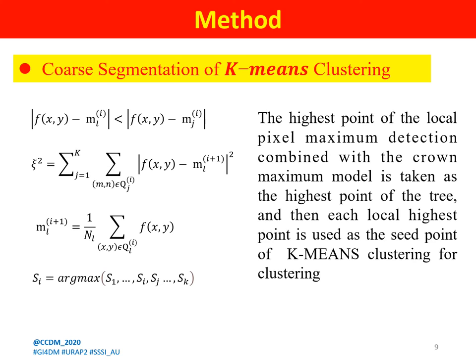The highest point of the local pixel maximum, combined with the crown maximum model, is taken as the highest point of the tree. Each local highest point is used as the seed point for K-means clustering. Step 1: the initial clustering centers represent the pixels at tree tops located by the variable window. Step 2: for each point, find the closest clustering center according to a given criterion and assign it to that cluster. Step 3: calculate the new clustering centers obtained in step 2. Step 4: when the cluster centers no longer change, the iteration is terminated.